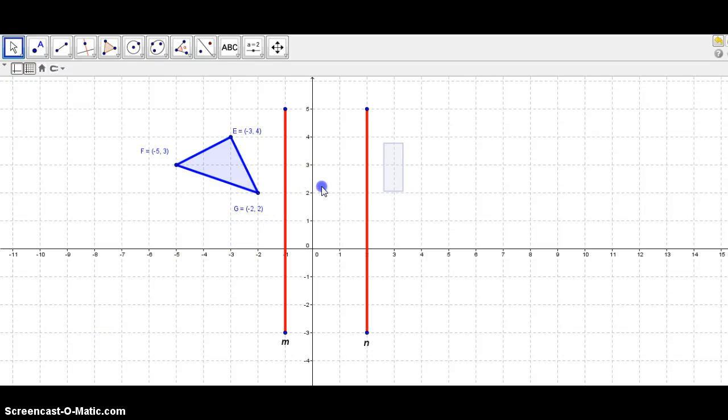All right, so now we will try to reflect this shape over a pair of parallel lines, line M and N. Okay, so this is our shape, and we will first reflect it over M, and then eventually reflect it over N. All right, so let's start.